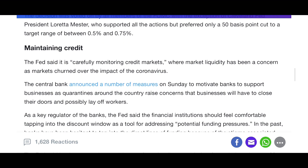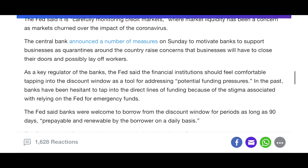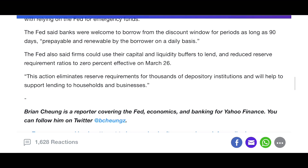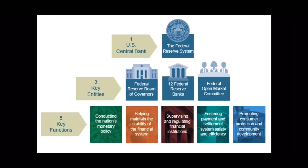I'm going to explain what the Fed is first, then we'll go over what zero interest rates are and then beyond. The Federal Reserve System is a U.S. central bank, also known as the Fed. It has three key entities: the Federal Reserve Bank of Governors, 12 Federal Reserve Banks, and a Federal Open Market Committee. It has five key functions: conducting the nation's monetary policy, helping maintain the stability of the financial system, supervising and regulating financial institutions, fostering payments and settlement systems safely and efficiently, and promoting consumer protection and community development.